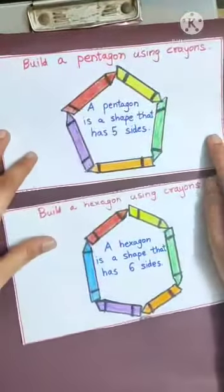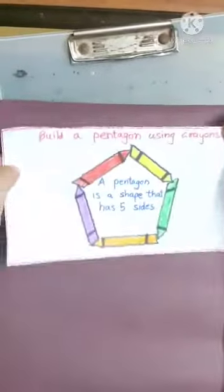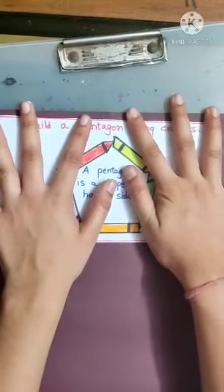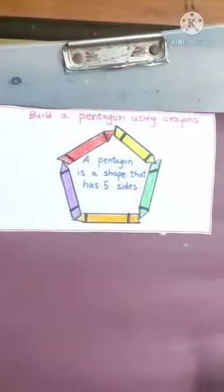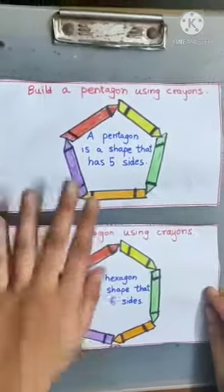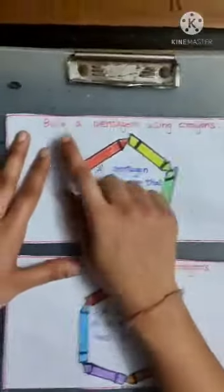Take glue and stick it on the card paper like this. Stick the other one as well and cut them. Now let us read what is written on them. Build a pentagon using crayons.